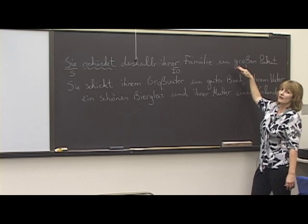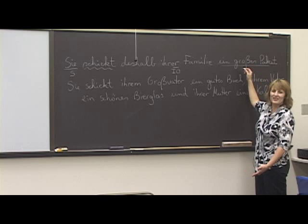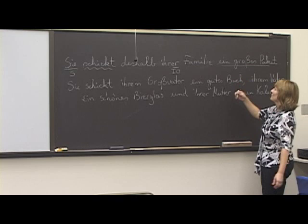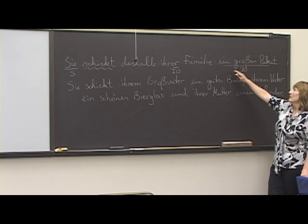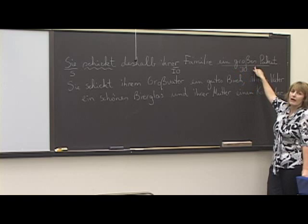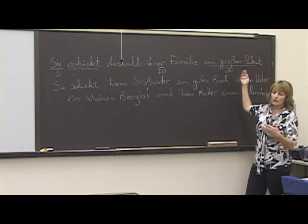Ein großes Paket — that's what she's sending, the direct object, accusative. In the accusative case, remember, only the masculine changes. So for neuter, ein großes Paket stays the same from nominative to accusative — das Paket. To whom? Indirect object. What is she sending? Direct object. She also sends: ihrem Großvater ein gutes Buch, ihrem Vater ein schönes Bierglas, und ihrer Mutter einen Kalender.